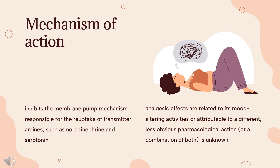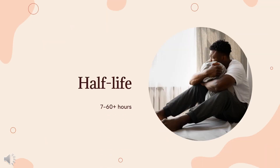Desipramine also possesses minor anticholinergic activity through its affinity for muscarinic receptors. TCAs are believed to act by restoring normal levels of neurotransmitters via synaptic reuptake inhibition and by increasing serotonergic neurotransmission via serotonergic receptor sensitization in the central nervous system. Half-life: 7–60+ hours; 70% eliminated renally.